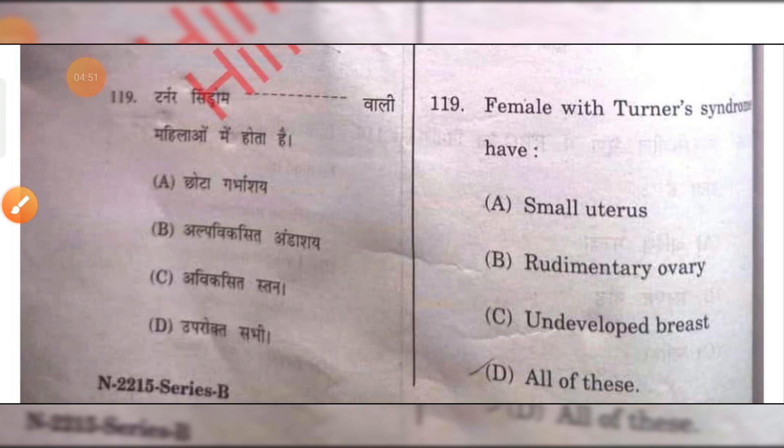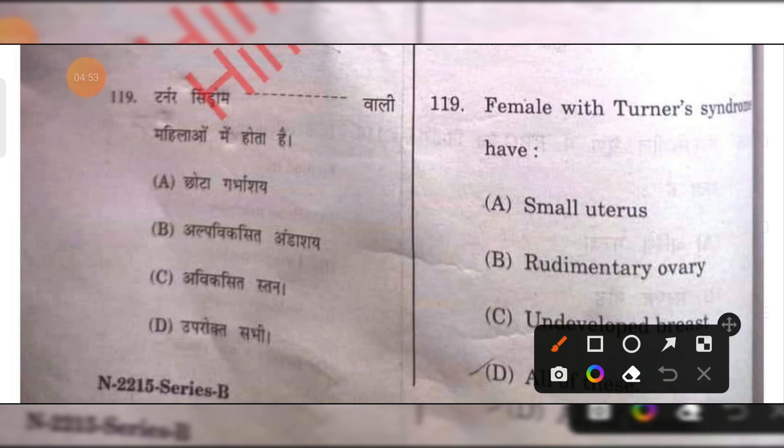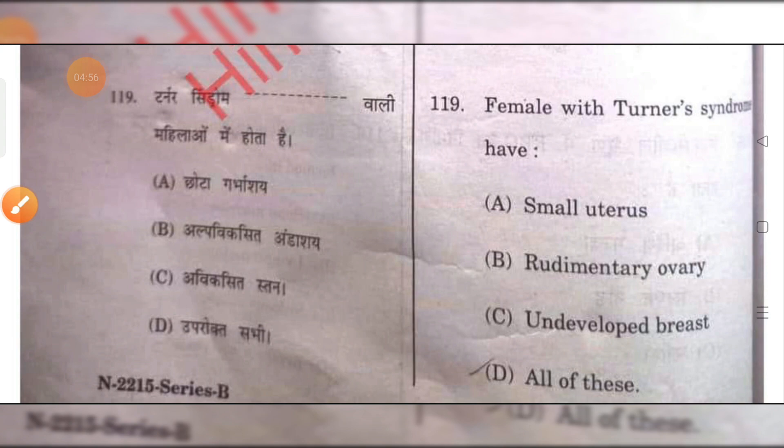Females with Turner syndrome have a small uterus. All of these is the correct answer. D is the correct answer.